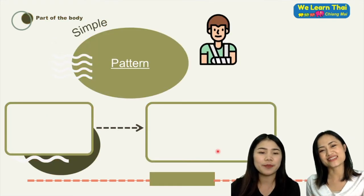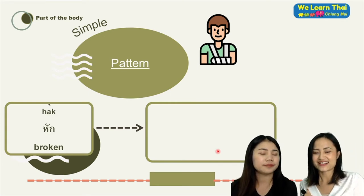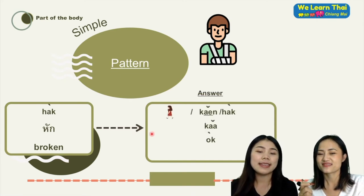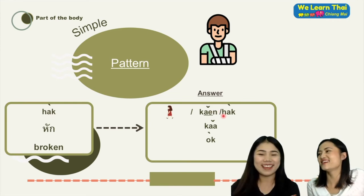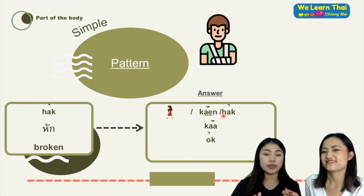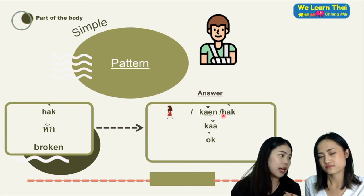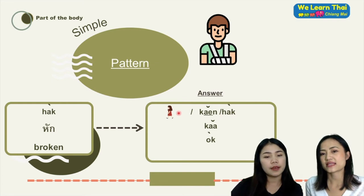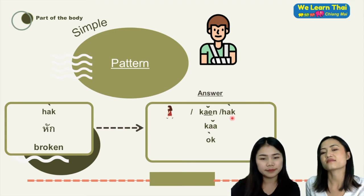The word หัก means broken. For the structure, you put the part of the body first and then หัก after. You can say ดิฉันแขนหัก, meaning 'my arm is broken.' Or ดิฉันขาหัก, meaning 'my leg was broken.'